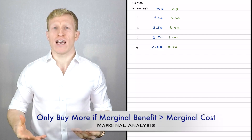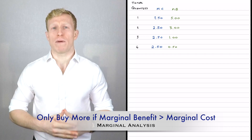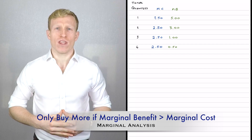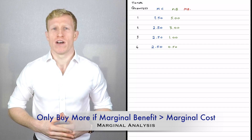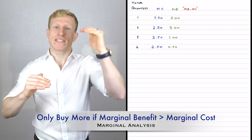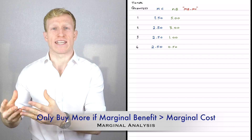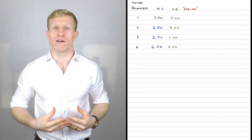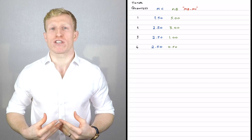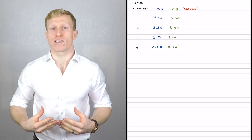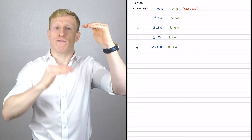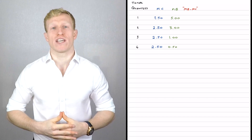Economists tell us we should only consume if the marginal benefit of each extra unit is greater than the marginal cost. For the first ice cream, the marginal benefit is £5 and the marginal cost is only £2.50, so you're giving up £2.50 in cash for a product you value at £5 — making yourself better off. The net benefit from that first ice cream equals the difference: £2.50.